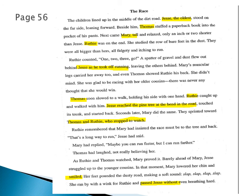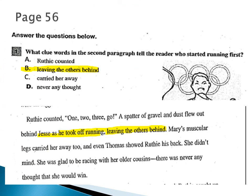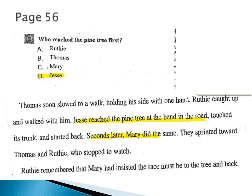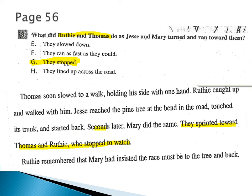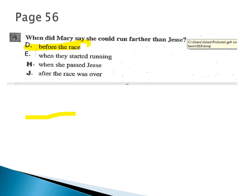Question one asks what clue word in the second paragraph tells the reader who started running first. Question two: who reached the pine tree first? The answer found in the passage is Thomas. Question three: what did Ruthie and Thomas do as Jess and Mary turned and ran toward them? We can find this in the same paragraph — just as they reached the pine tree.